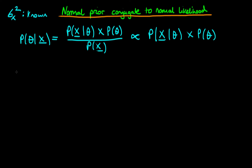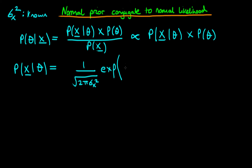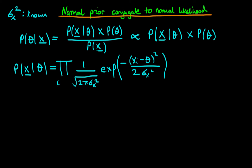Starting off with the likelihood, we know that in the case of a normal likelihood, the probability of x given theta is equal to 1 over the square root of 2 pi sigma_x squared, times the exponent of minus (x_i minus theta) squared divided through by 2 sigma_x squared. In this case we're talking about a sample of n observations, and we're going to assume those observations are randomly sampled — in Bayesian speak, they are exchangeable. The overall likelihood is given by taking the individual likelihoods and multiplying them together.